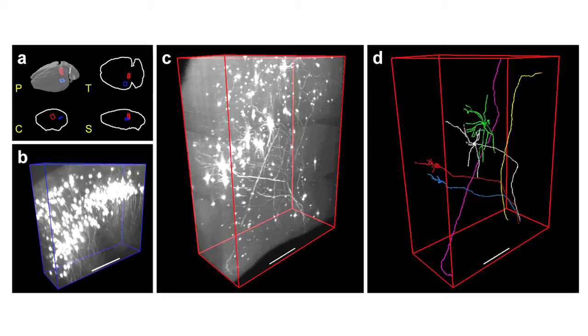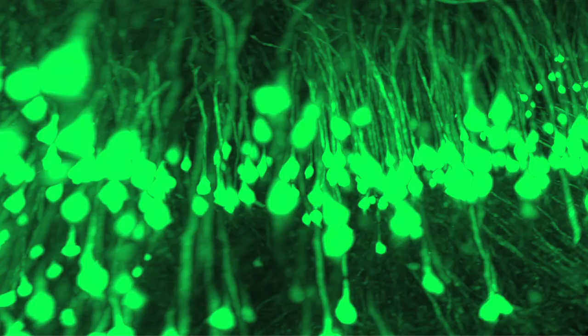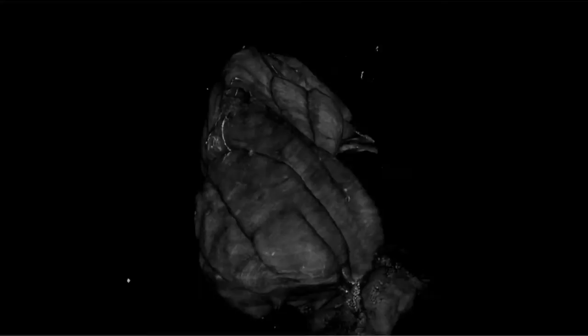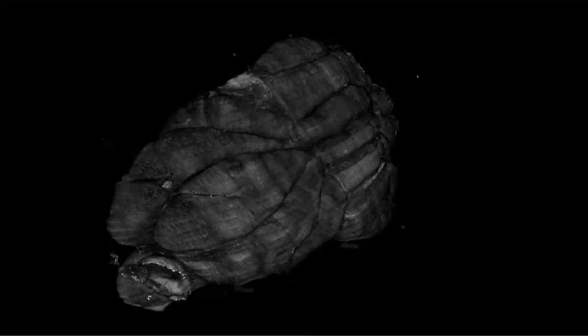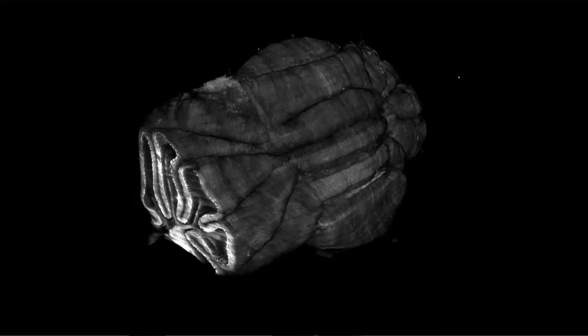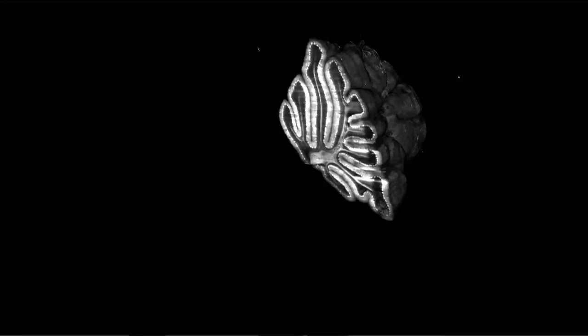You obtain a tomographic image with a resolution which is 1,000 times higher than nuclear magnetic resonance. One millimeter cube is the resolution of MRI — that's a million neurons in one millimeter cube. Here we have a resolution of one micron, so a volume one billion times smaller — just a single cell.